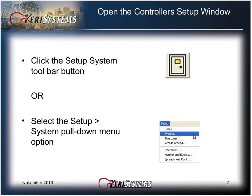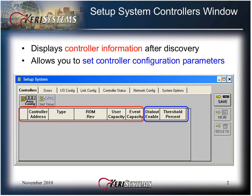Open the controller setup window by clicking on the Setup System toolbar button, or from the Setup pull-down menu select System. The controllers window displays controller information after discovery and allows you to set controller configuration parameters.